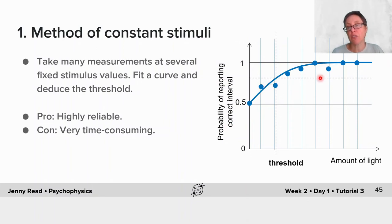The dots here represent the proportion of reporting the correct interval as a function of the stimulus intensity. Then you fit a nice smooth curve, like a cumulative Gaussian, through these points. From that fitted curve, you can deduce the threshold.